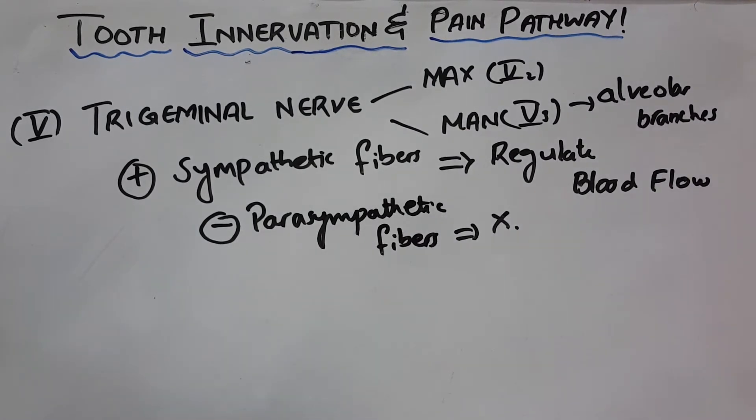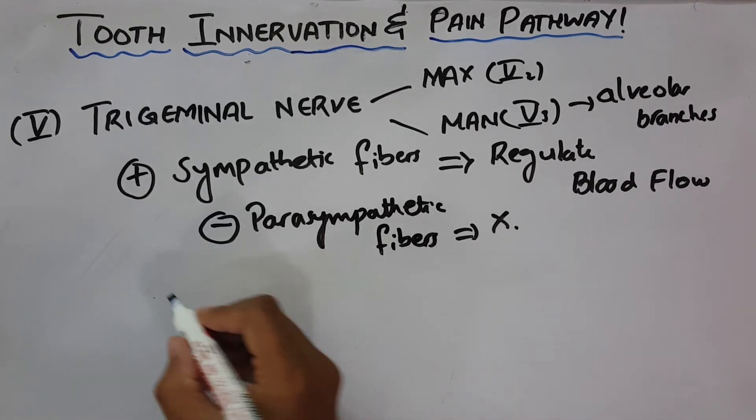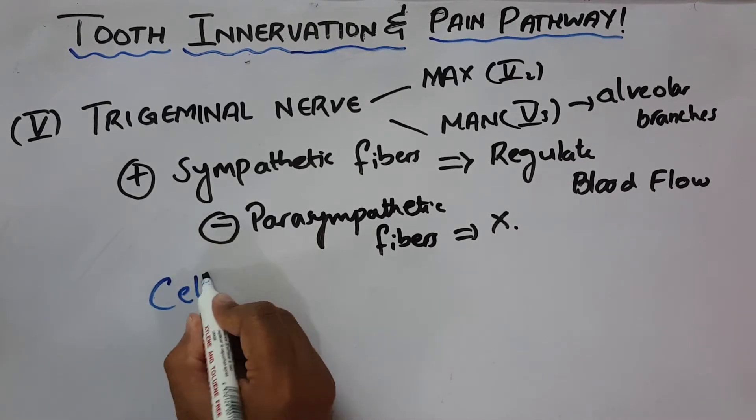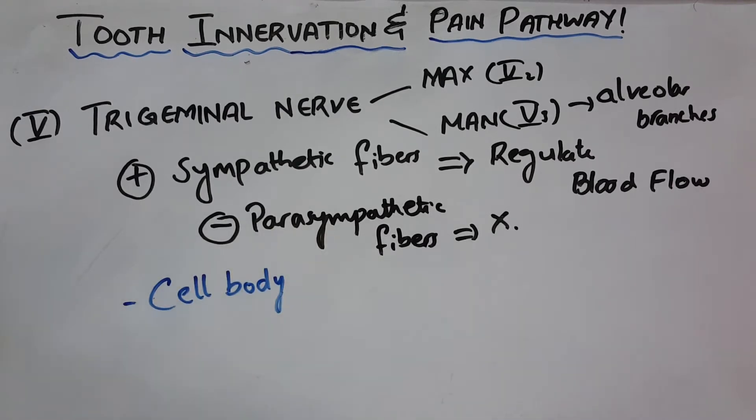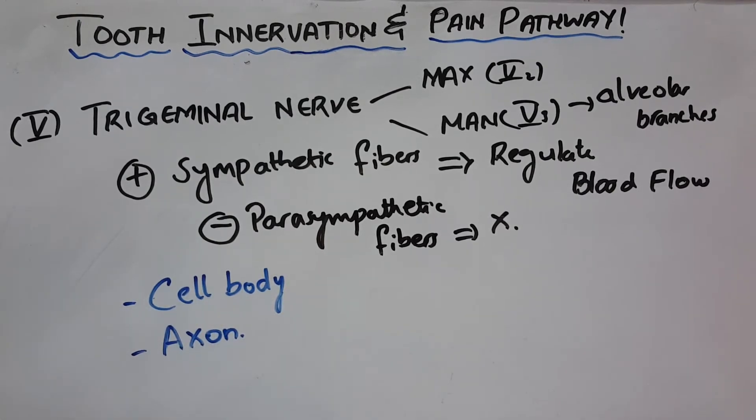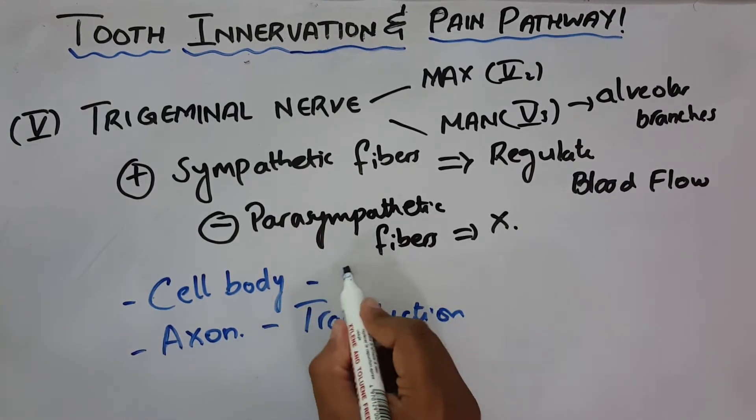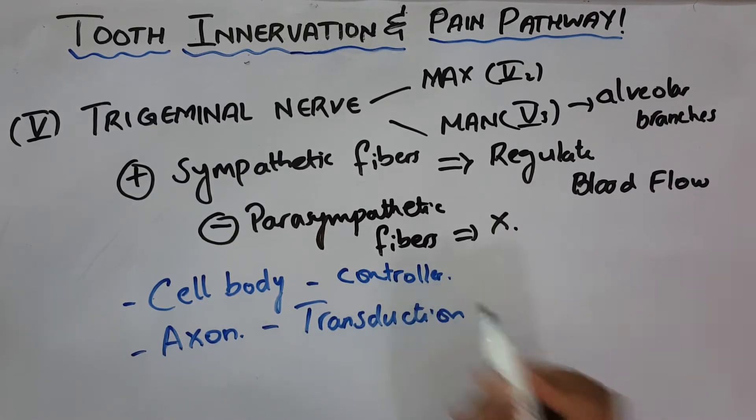We know that a nerve has two components. It has a cell body, which contains the nucleus, the nucleolus, and other subcellular organelles. It is the main controller of the function of the nerve. Second, it has an axon, which is a cytoplasm projection of the cell body enclosed by a membrane. The axon is responsible for transduction of the signals.